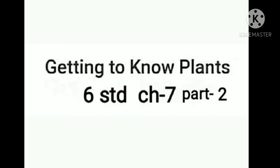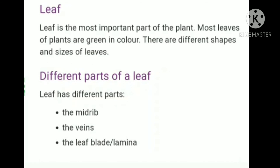Hello students. In this video we will see the second part of Chapter 7: Getting to Know Plants. In this video we will learn about parts of the plant. In the last video we learned about different types of plants — herbs, shrubs, creepers, climbers, trees, algae, etc. In this video we will learn about parts of plants: leaf, stem, root, flower, fruits, seeds, etc.